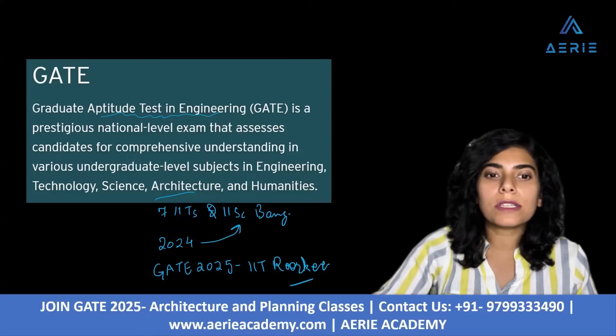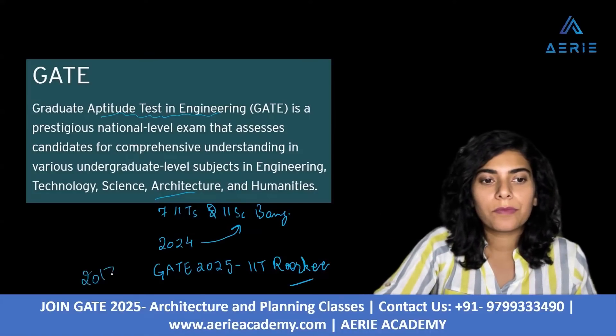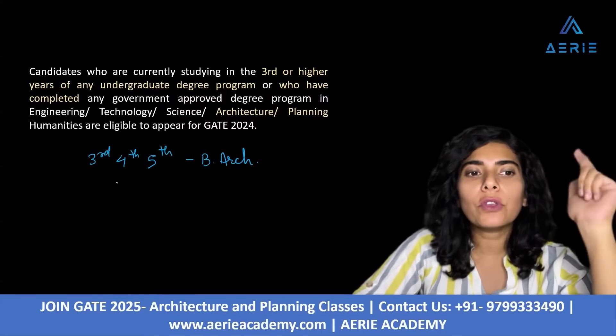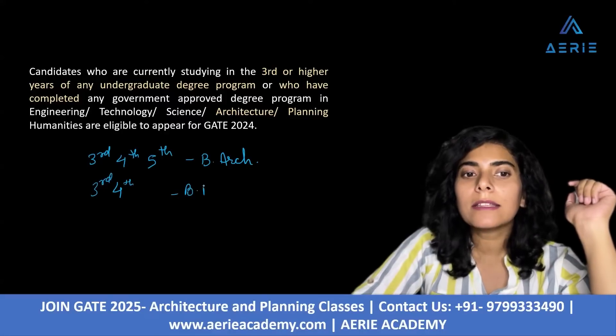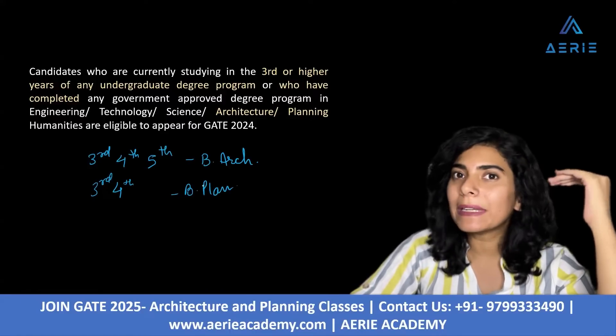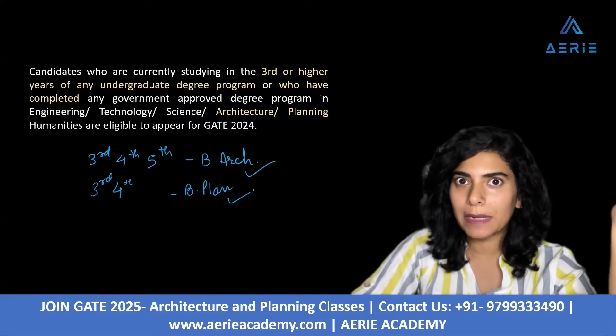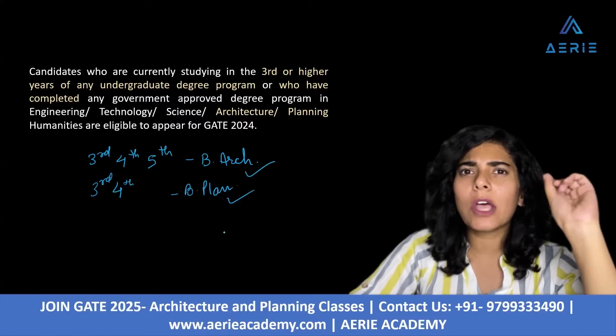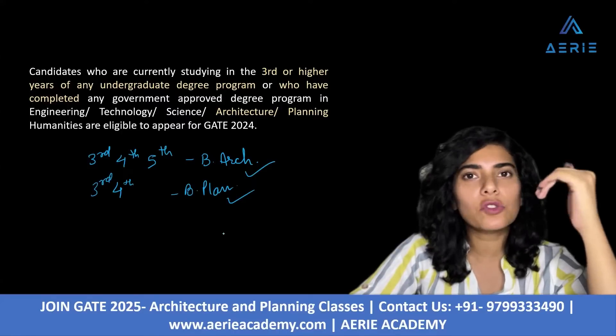Now moving on to the eligibility criteria for GATE 2025. If you are a student in third year, fourth year, or fifth year of your bachelor's in Architecture, you are eligible. If you are a third year or fourth year student of B.Plan, you are also eligible. If you have completed your graduation in B.Arch or B.Plan, you are also eligible. There is no restriction on the number of times you can give this exam — you can give it any number of times — and there is no age limit.